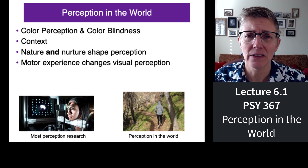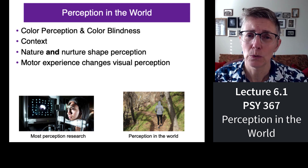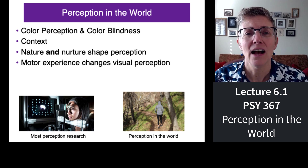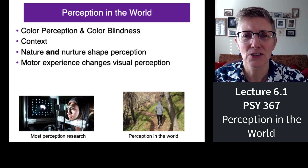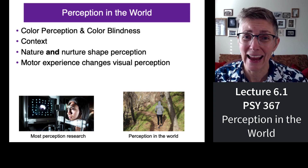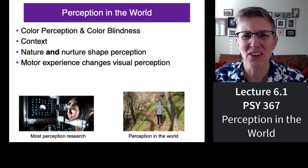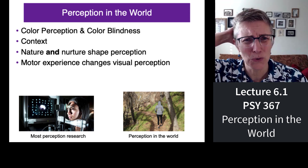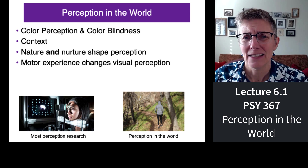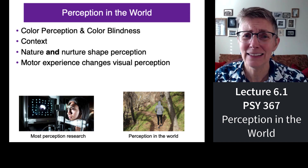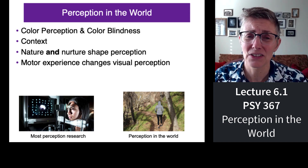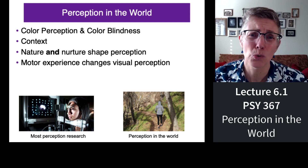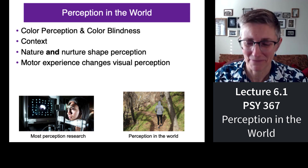I'm going to spend a bit of time talking about color perception and color blindness. We'll focus on context. We'll look at the evidence to support both nature and nurture as shaping your perceptual abilities. And we'll show how the story that the motor systems are over here and the visual systems are back here is kind of oversimplified, because there's probably one visual-motor system.